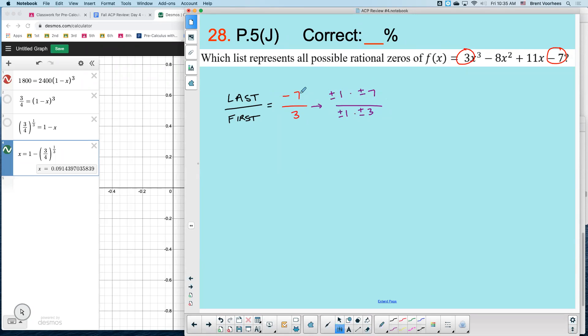So I've taken the last coefficient, the first coefficient, last and first. You always do that. You find the factors of each, and then you just divide them out and reduce to get your final solution.